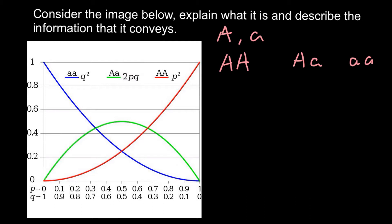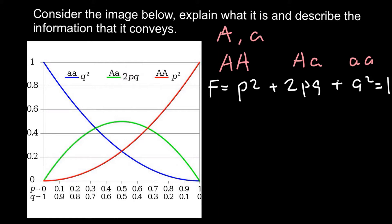In order to solve many population genetics problems we can use Hardy-Weinberg equilibrium: the frequency of all three genotypes in a population equals p² + 2pq + q², and all this equals 1, or 100%. Here p² stands for the homozygous dominant genotype, 2pq stands for the heterozygous genotype, and q² stands for the homozygous recessive genotype.